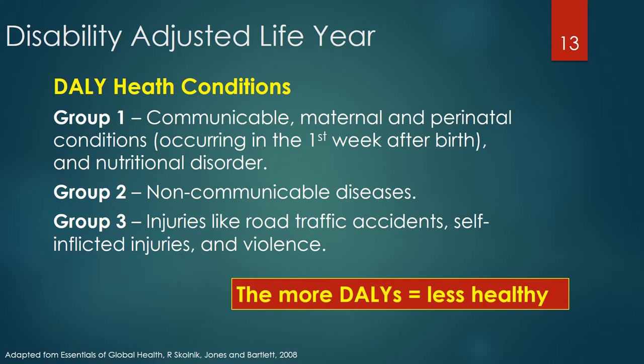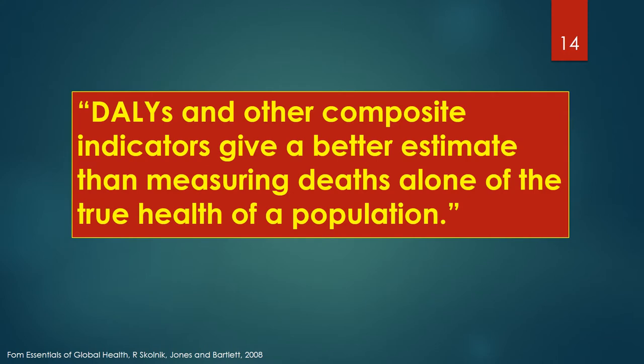Group 2 is non-communicable diseases. Group 3 is injuries like road traffic accidents, self-inflicted injuries, and violence. A country or group that has more DALYs in the three groups of health conditions listed is considered less healthy than others with fewer DALYs. A goal of health policy is to reduce the number of DALYs in the most cost-effective manner possible. DALYs and other composite indicators give a better estimate than measuring deaths alone of the true health of a population.